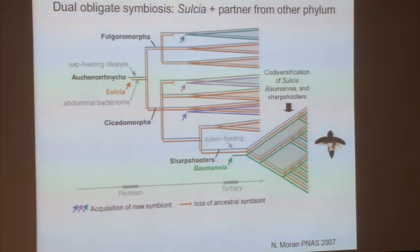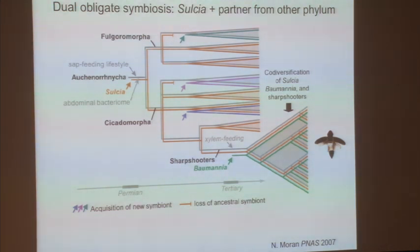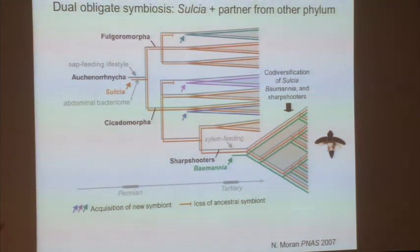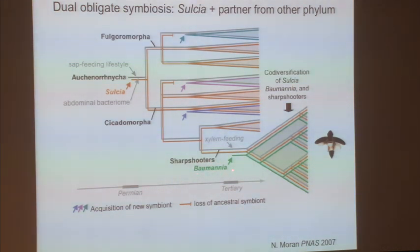In other Auchenorrhyncha, they'll almost always have Sulcia but a different partner symbiont — in sharpshooters it's Baumannia, over here it's Zinderia, and there's Hodgkinia in cicadas. We did a bunch of phylogenetics and the picture that gave rise to this 'fairyland of symbiosis' shows the whole Auchenorrhyncha — probably including cicadas, spittlebugs, leafhoppers, treehoppers, and planthoppers, many tens of thousands of species — with Sulcia acquired in the common ancestor in the Permian, something like 270 million years ago.